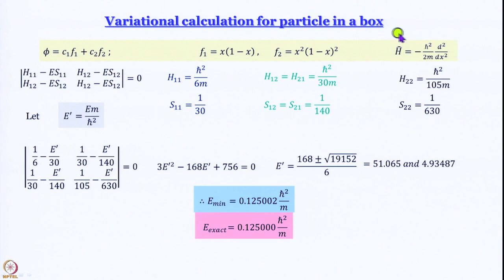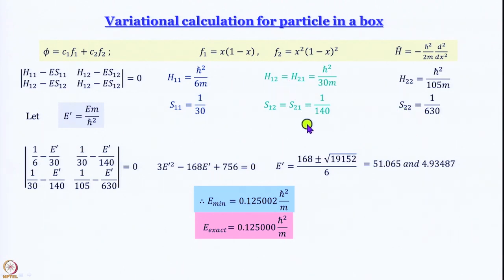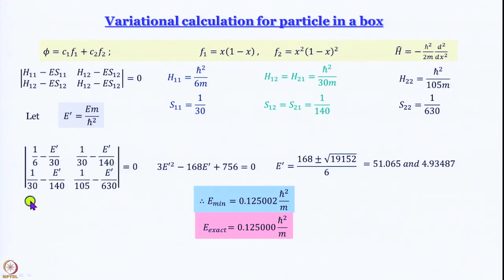The Hamiltonian is −ℏ²/2m · d²/dx². We wrote the secular equation and found expressions for all matrix elements h₁₁, h₁₂, h₂₁, h₂₂, s₁₁, s₁₂, s₂₁, s₂₂. Substituting E′ = mE/ℏ², the secular determinant simplified to the form (1/6 − E′/30)(1/30 − E′/140) − (1/30 − E′/630)² = 0.